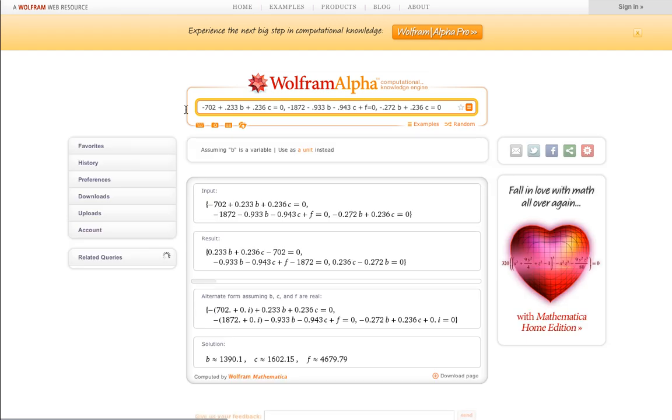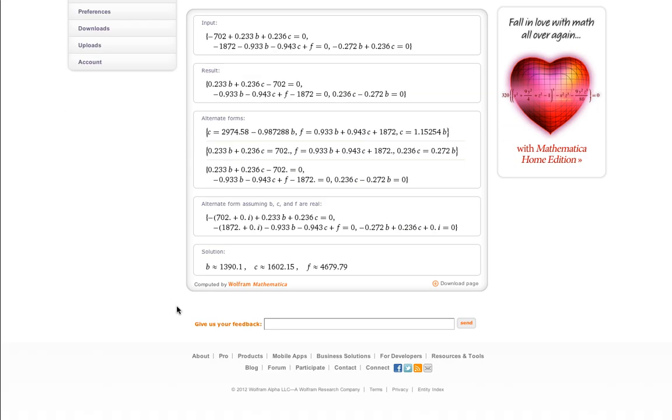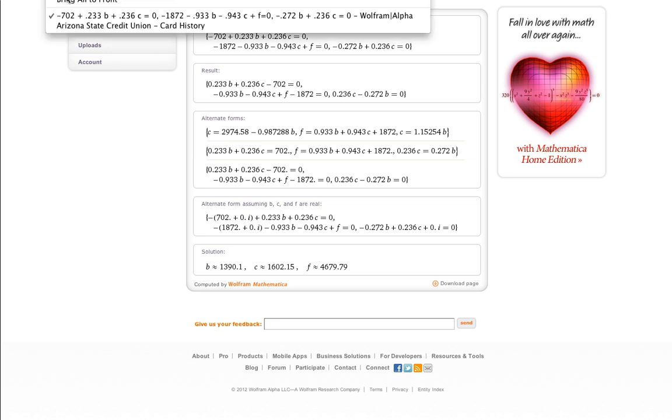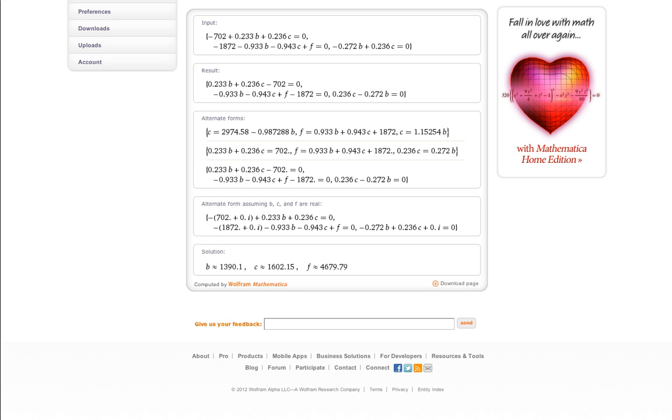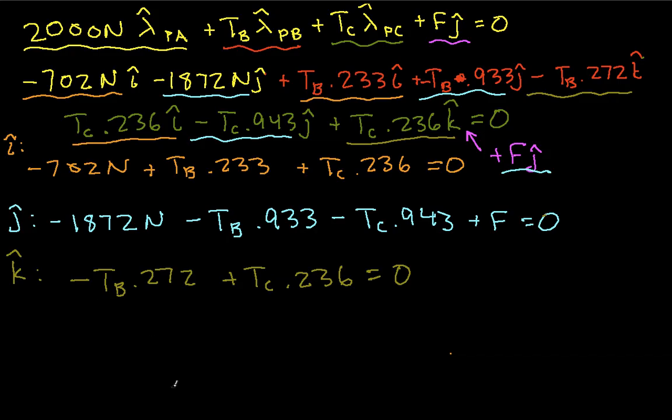And it chugs away for a while and gives us a solution that says that the tension in B is 1,390 newtons, C is 1,602 newtons, and F is 4,680 newtons. So let's go write this down.